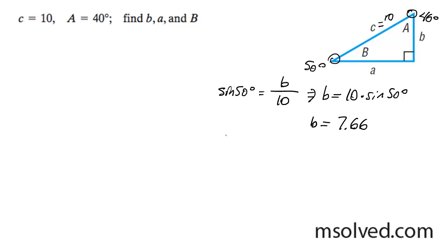Now, I want to solve for A, so sine of 40 degrees is equal to A over 10. A is equal to 10 times the sine of 40 degrees. So A is equal to 6.43.